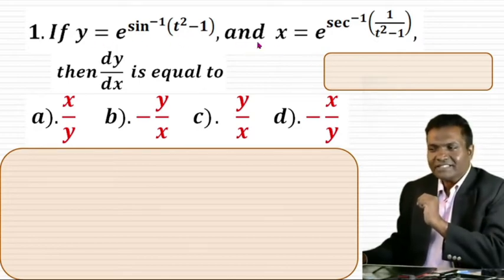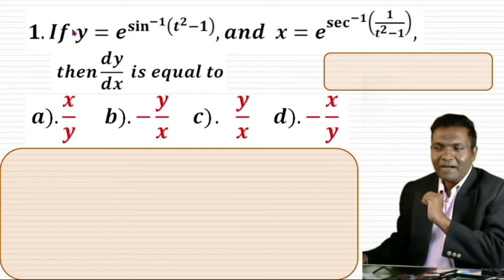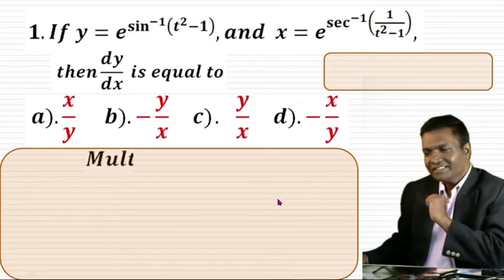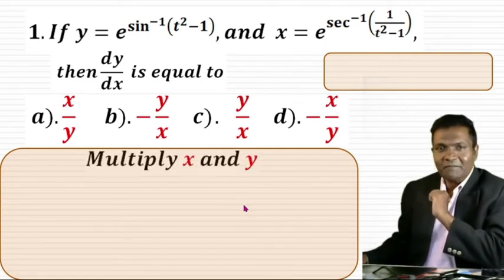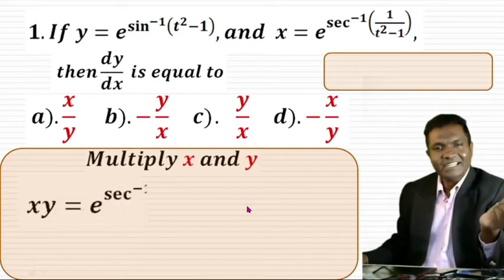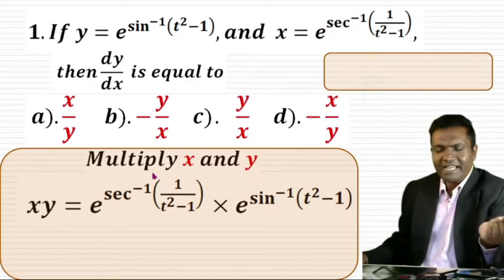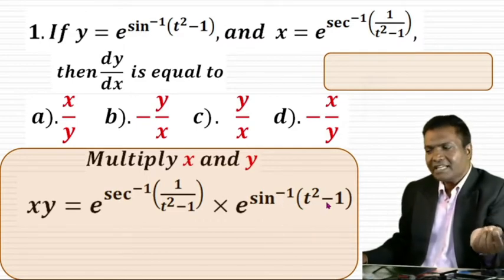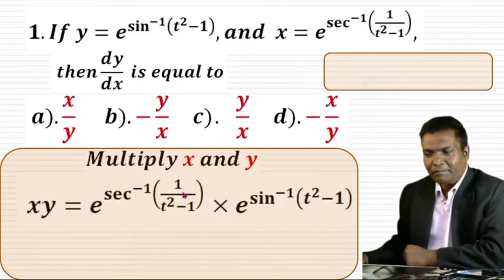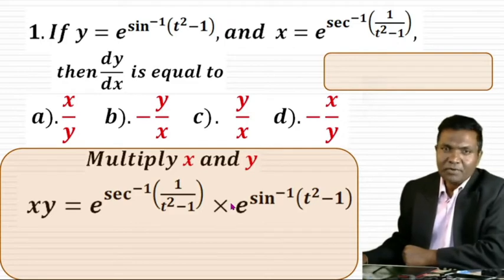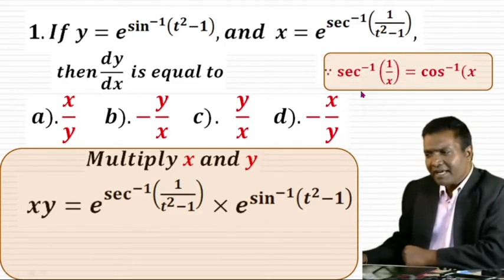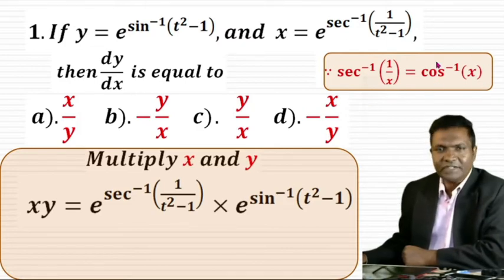What you have to do is just multiply x and y. When you multiply x and y, it turns into a very simple equation. You will get e to the power sec⁻¹(1/(t²-1)) times e to the power sin⁻¹(t²-1). We have the property that sec⁻¹(1/x) can be written as cos⁻¹(x) in inverse trigonometric functions.